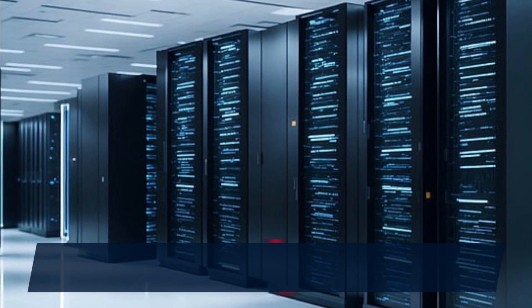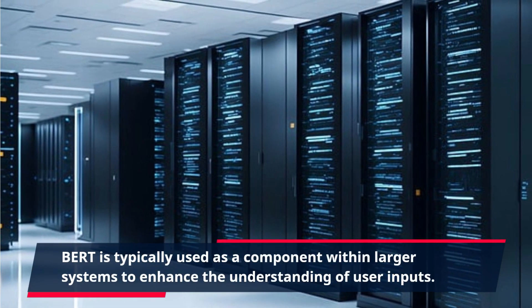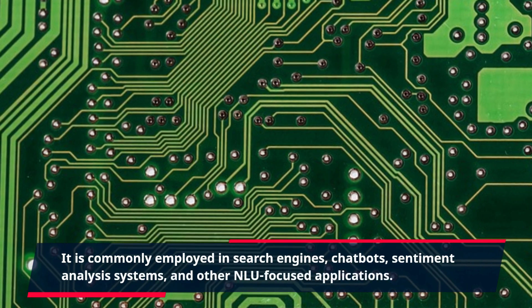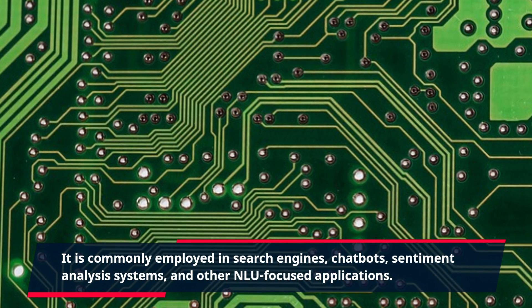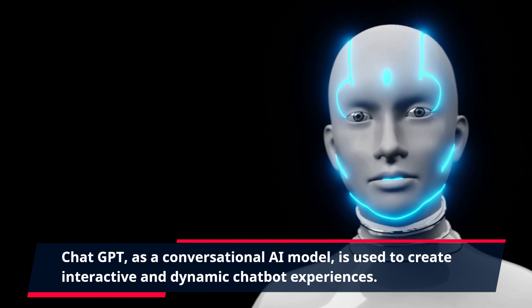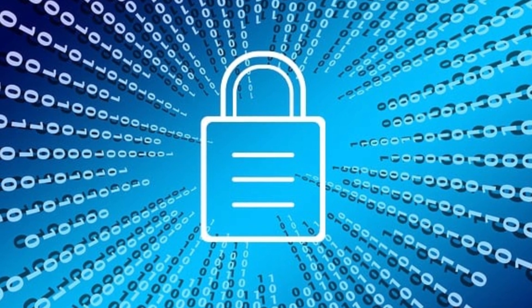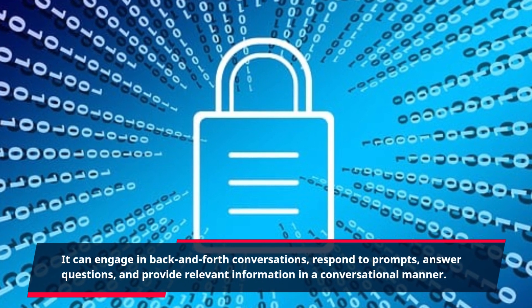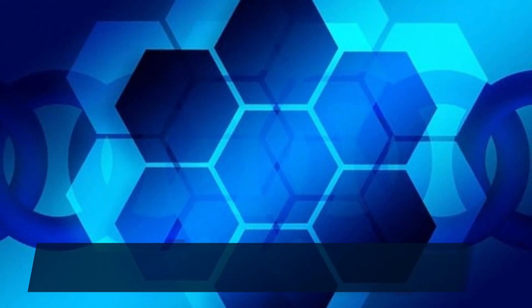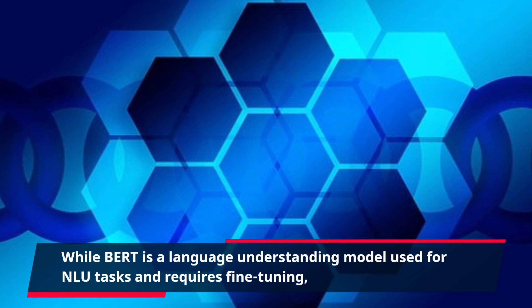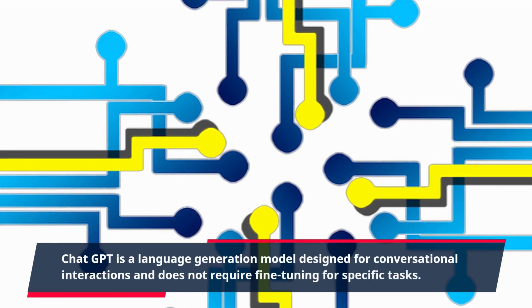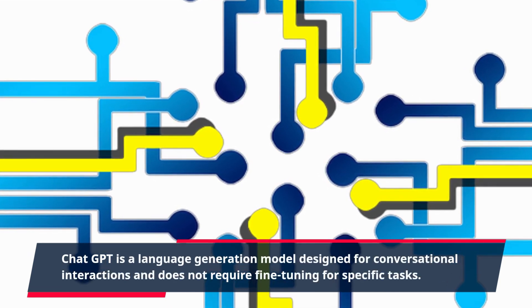Interaction style: BERT is typically used as a component within larger systems to enhance the understanding of user inputs. It is commonly employed in search engines, chatbots, sentiment analysis systems, and other NLU-focused applications. ChatGPT, as a conversational AI model, is used to create interactive and dynamic chatbot experiences. It can engage in back-and-forth conversations, respond to prompts, answer questions, and provide relevant information in a conversational manner. While BERT is a language understanding model used for NLU tasks and requires fine-tuning, ChatGPT is a language generation model designed for conversational interactions and does not require fine-tuning for specific tasks.